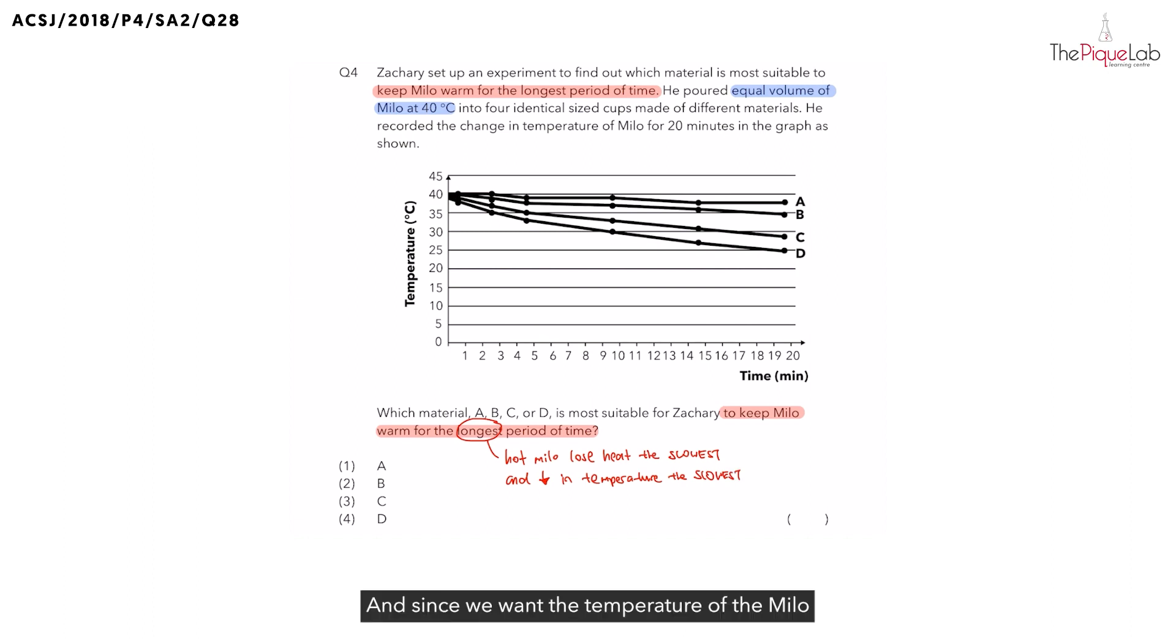And since we want the temperature of the Milo to decrease the slowest, this means, shall we choose the material that is the best or the poorest conductor of heat? So, we should use the poorest conductor. So, we can write this down. We should use the poorest conductor of heat.